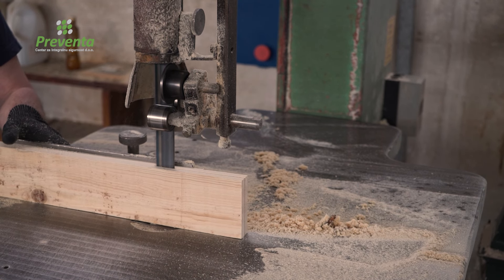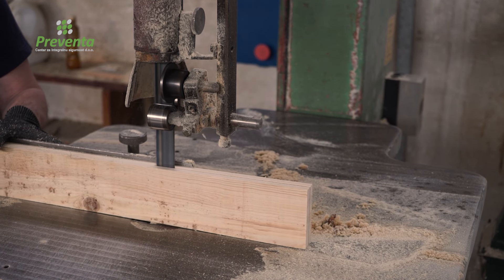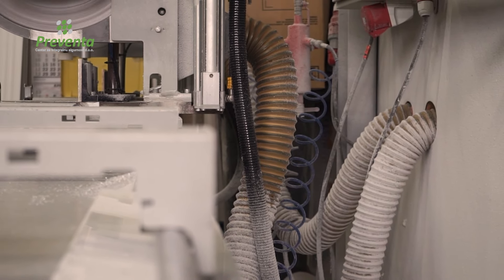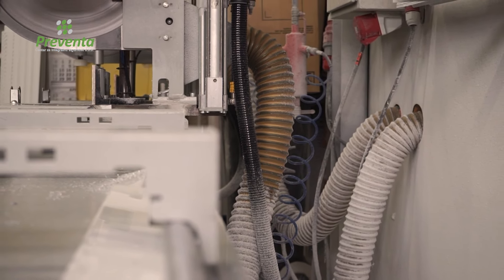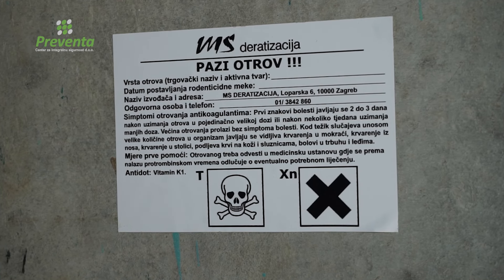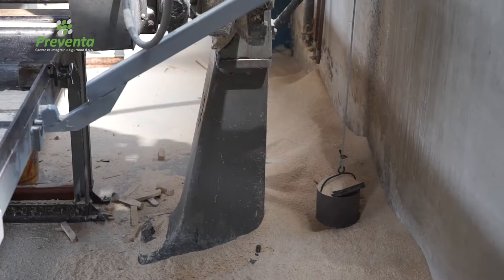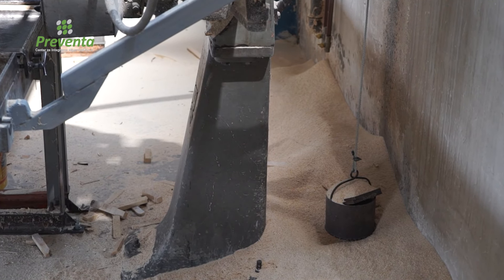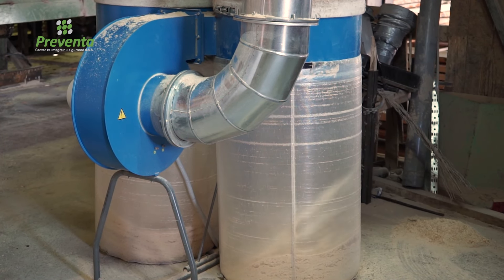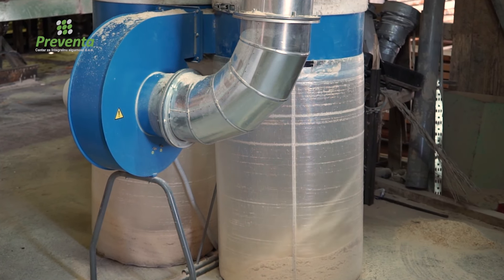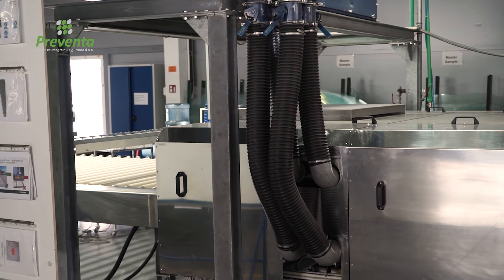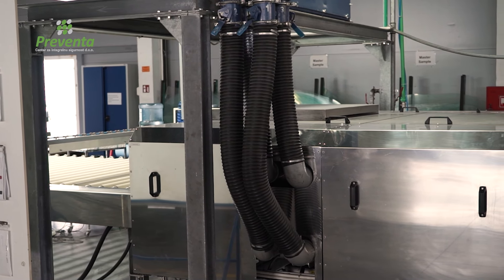Harm to the health of workers is often caused by dust from machine or manual processing of materials. The effects of dust on human health depend on its chemical composition and duration of exposure, ranging from allergic effects to toxic and carcinogenic effects. When dust is generated in the technological process, preventative measures should be taken to prevent the spread of dust into the working environment. This can be achieved, for example, by installing local ventilation on the dust source, sealing the process, and regular cleaning.